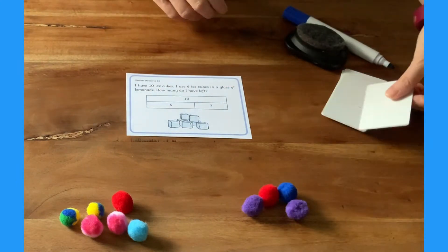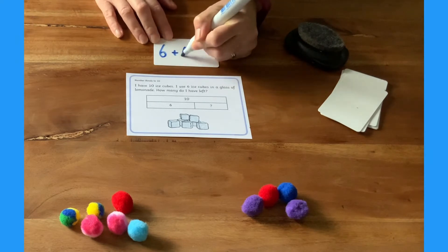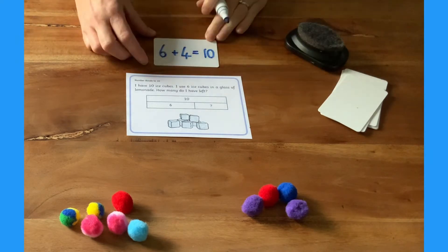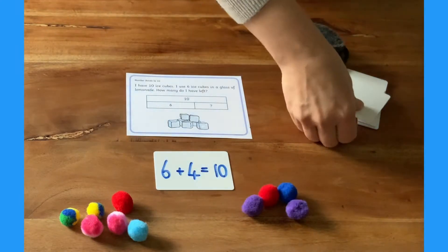Children could write a number sentence that matches the problem. 6 ice cubes and 4 ice cubes is 10 ice cubes altogether. 6 add 4 equals 10.